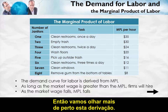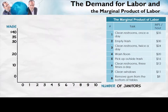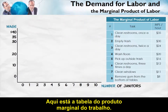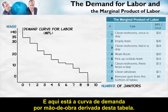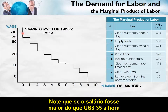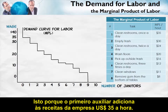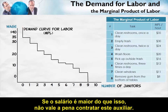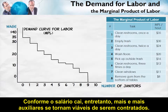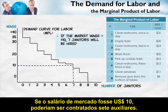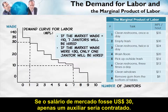Here's the marginal product of labor schedule, and here is the demand for labor derived from that schedule. Notice that if the wage were greater than $35 an hour, the firm would demand no janitors, because the very first janitor only adds $35 an hour to the firm's revenues — if the wage is higher than that, that janitor is not worth hiring. As the wage falls, more and more janitors become worthwhile to hire. If the market wage were $10, seven janitors would be hired; if the market wage were $30, only one janitor would be hired.